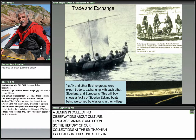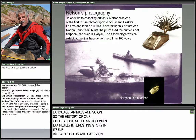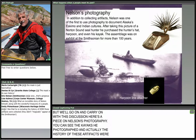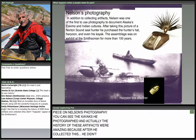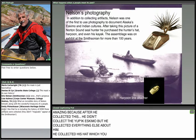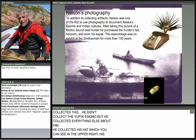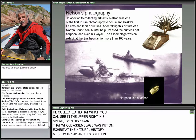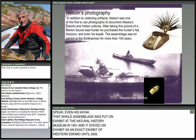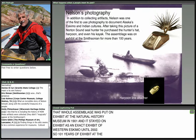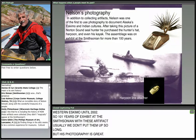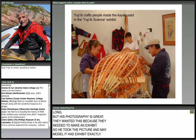Here's a little piece on Nelson's photography — you can see some of the kayaks he photographed. The history of these artifacts is amazing: after he collected this kayak, along with the kayaker's hat which you see in the upper right and his spear, that whole assemblage was put on exhibit at the Natural History Museum in 1901. It stayed on exhibit as an intact exhibit of Western Eskimo until 2002 — 101 years on exhibit at the Smithsonian. Nelson's photograph was the model for that exhibit; they modeled it exactly after his picture.